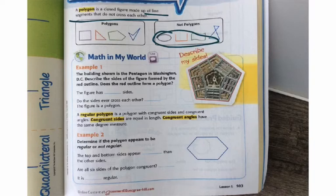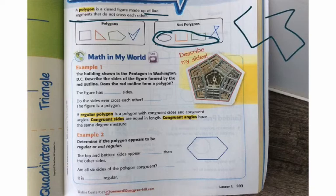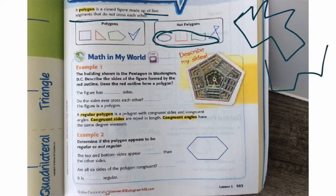For example, if I were to do this shape right here, it would be considered a polygon. All the line segments do not cross each other and it's a closed figure. So something like this is not a polygon because it is an open figure.